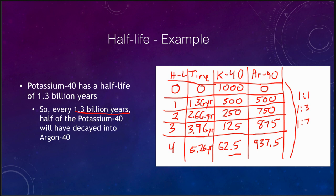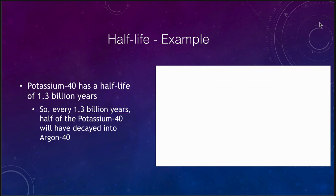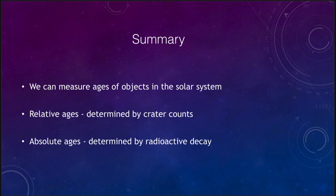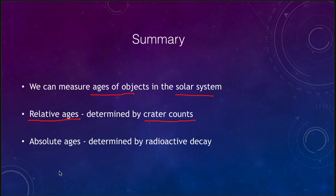To summarize: we can determine ages of objects in the solar system. We talked about relative ages using crater counts — how many craters there are in different regions — to determine relatively how old they are, whether comparing regions on a single planet or moon, or comparing different planets and moons. And we looked at how we can determine absolute ages by examining the radioactive decay of minerals from rock samples brought back from an object's surface.